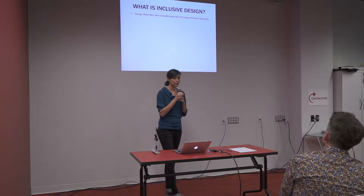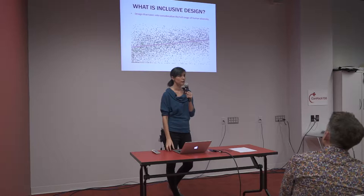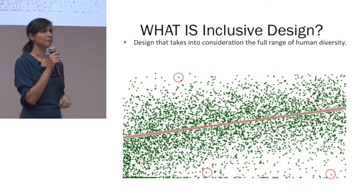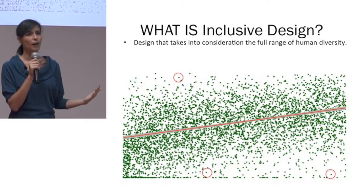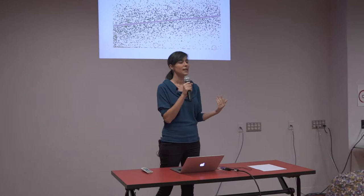Inclusive design is design that takes into consideration the full range of human experience — with respect to ability, gender, language, culture, preferences, personalities — all of those things factor in. Not just designing for the average user, but certainly considering the edge cases: who falls on the tail ends of the distribution. And not just thinking about those cases, but actually relishing the opportunities that arise from thinking about the edges and the people who fall on the far ends of those distributions.